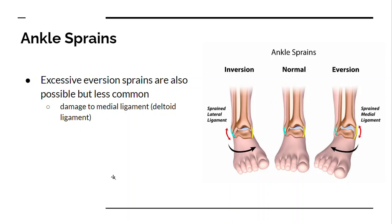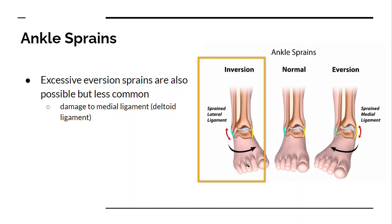Excessive eversion sprains are possible, but less common. This image shows your normal anatomy with the medial and lateral ligaments: inversion will sprain the lateral ligament, and eversion will sprain the medial ligament.